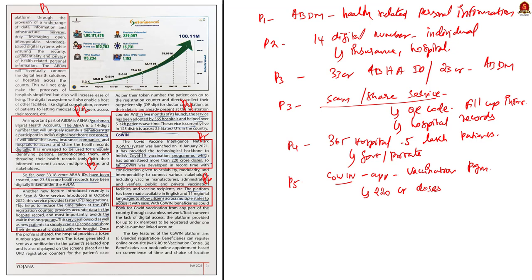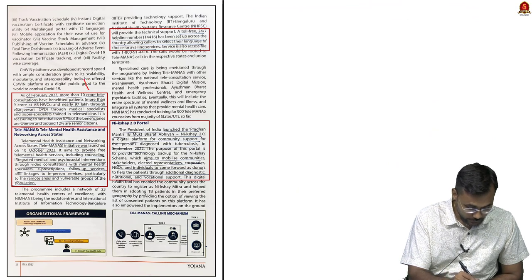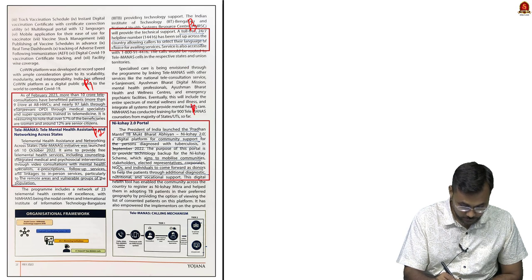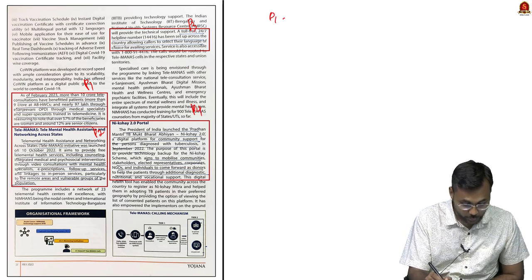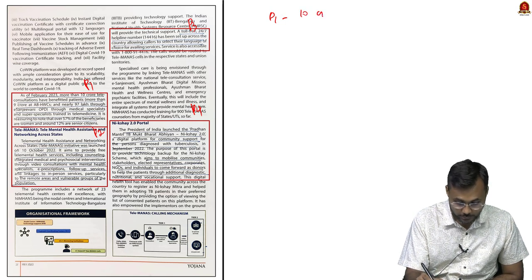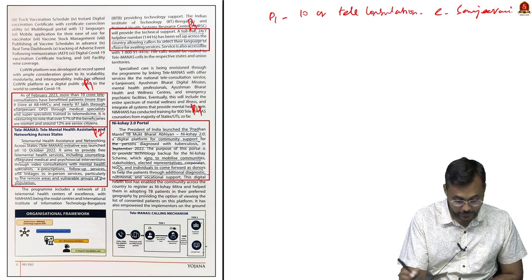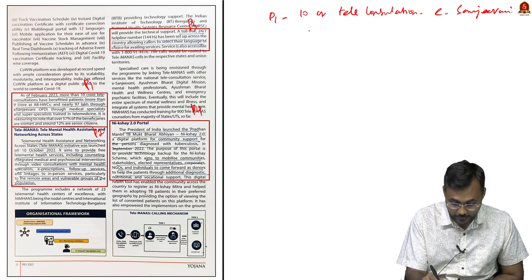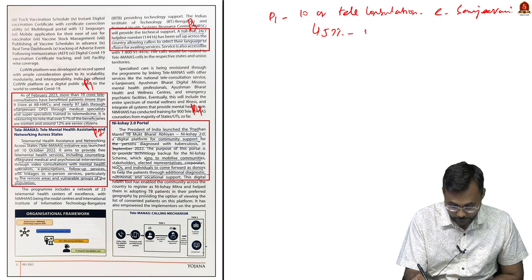Another important point is that the CoWIN app is available in English and 11 regional languages. Paragraph 1 of the next section notes that 10 crore teleconsultations have been done under E-Sanjeevani, of which 57 percentage are women and 12 percentage are senior citizens.